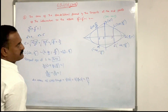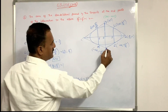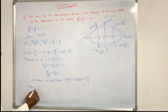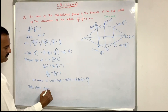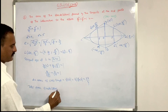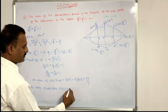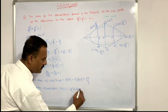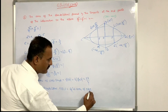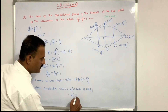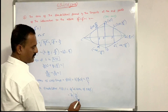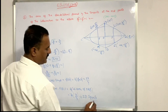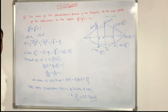Therefore the total quadrilateral area ABCD = 4 × area of triangle OAB = 4 × (27/4). The 4 cancels, giving total quadrilateral area = 27 square units.